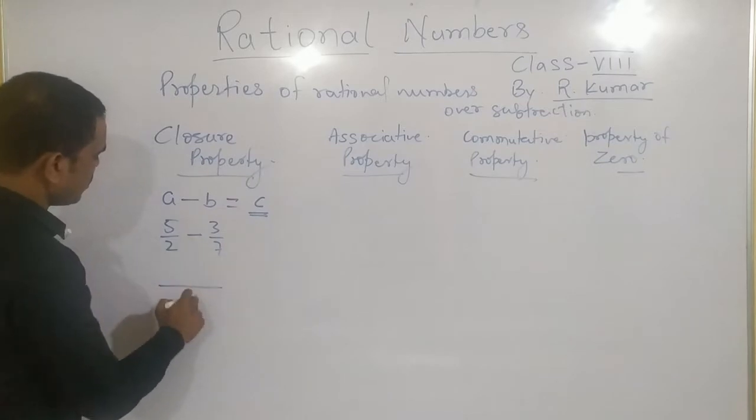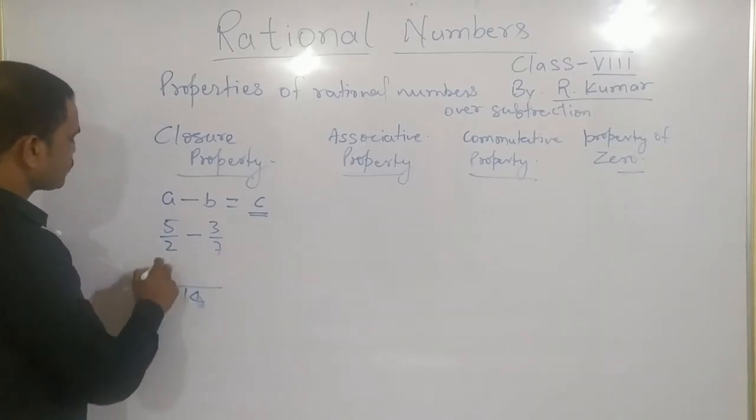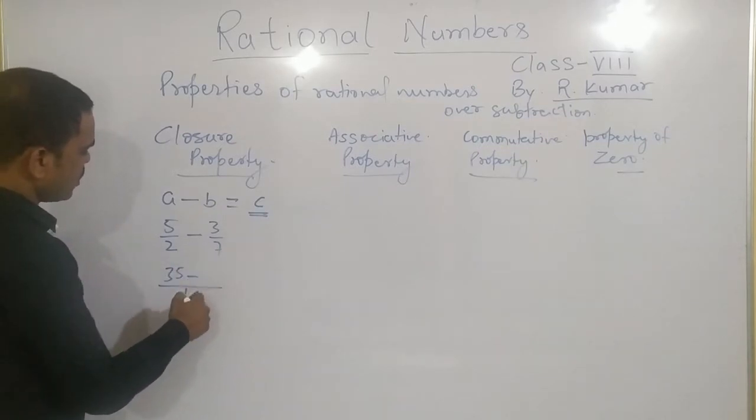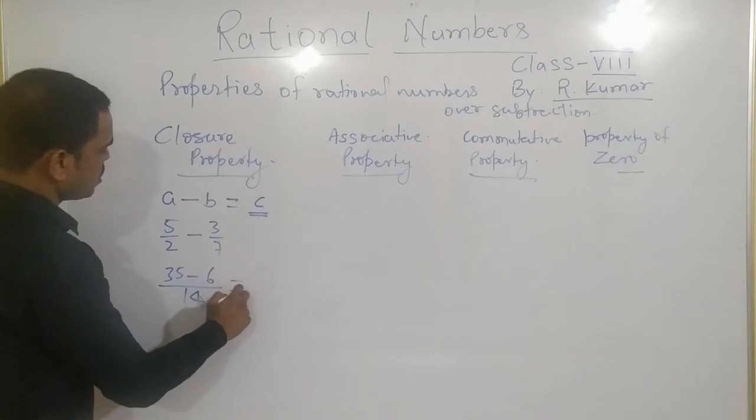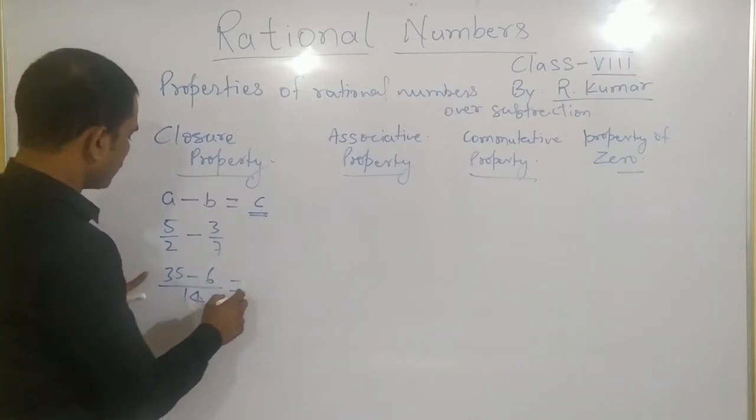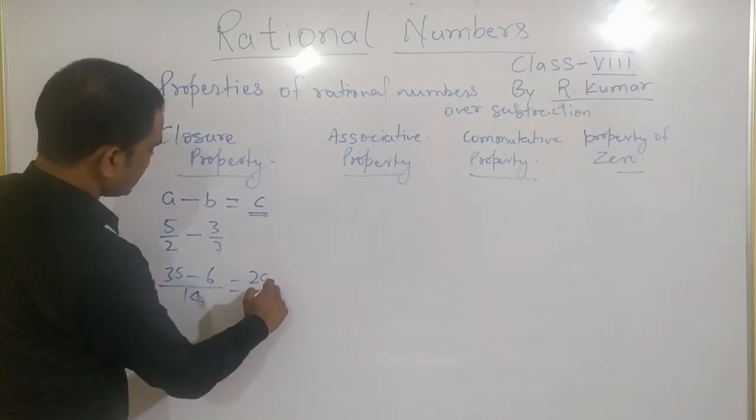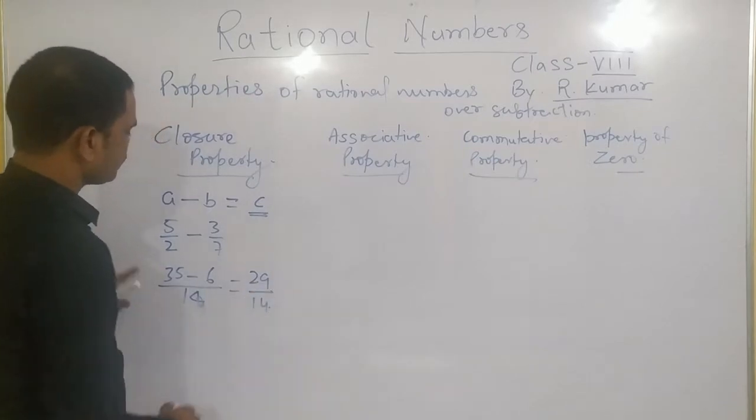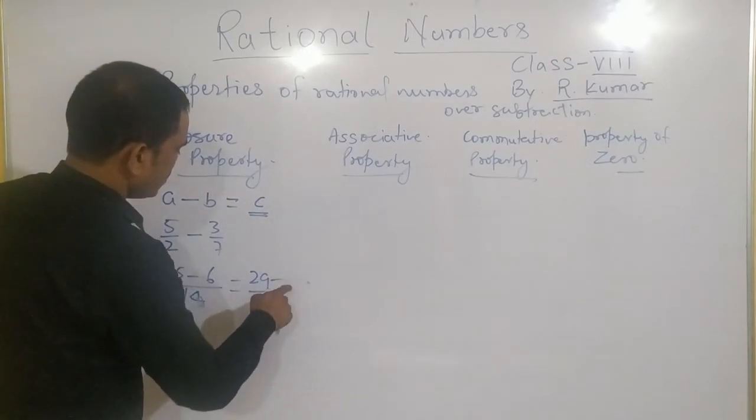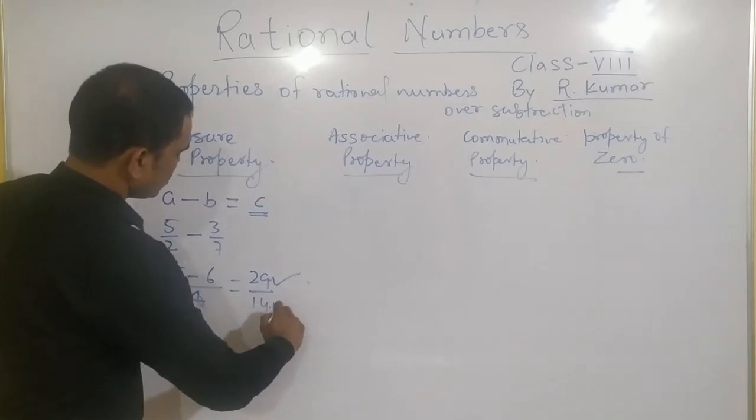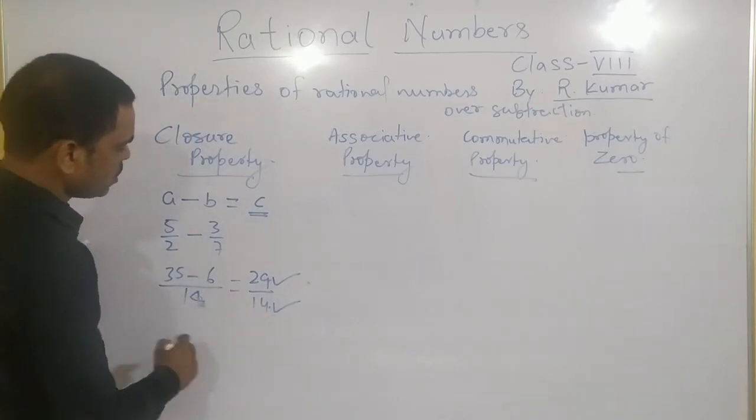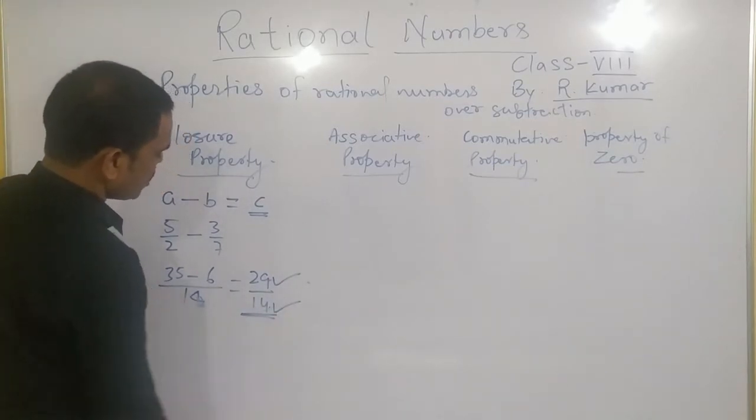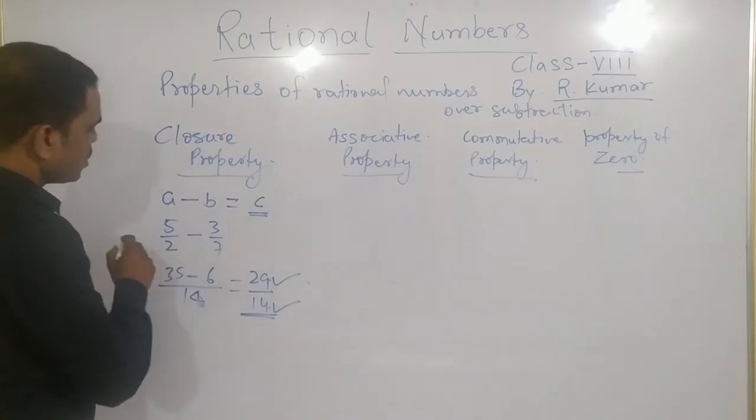So I solve it. LCM will be 7 times 2 equals 14. Now, we need to do this. What is coming now? 29 by 14. You can see this is integer, this is another integer also. And you can see this is not coming 0. Means what? It is a rational number.